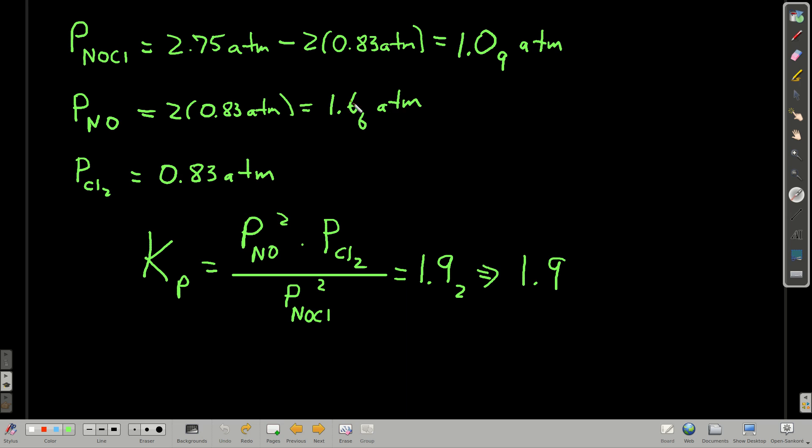Plug these into here. So we're going to do 1.66 squared times 0.83 divided by 1.09 squared. And we come up with, check my math, get about 1.9 for Kp. There's Kp.